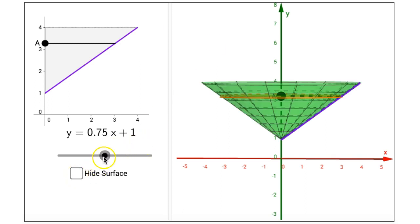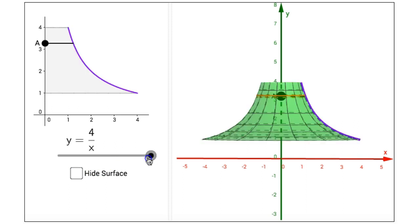Unchecking the checkbox and sliding our slider to the right one more time, this is our third and final function, y equals 4 divided by x.